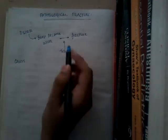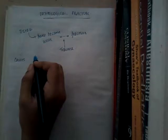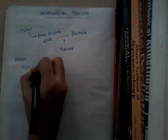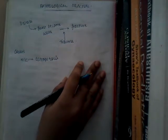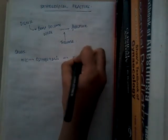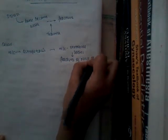What are the causes of pathological fracture? Basically the bone becomes weak by a disease. The most common cause of pathological fracture is osteoporosis. In osteoporosis it mainly affects the bones of the vertebral bodies first, and then it also causes fracture of the neck of femur or Colles' fracture. All these fractures can be caused due to osteoporosis.